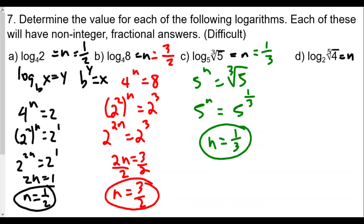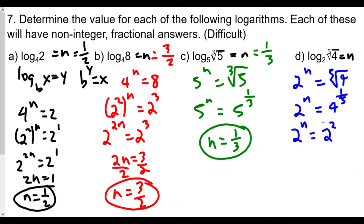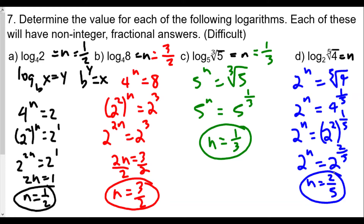For 7d, we have two to the n equals the fifth root of four. We rewrite this in exponential form — the radical becomes four to the one-fifth power because the index of five becomes the denominator of the exponent. We rewrite four as base two, so two to the n equals two squared raised to the one-fifth. When you raise a power to another power, we multiply exponents, giving us two to the n equals two to the two-fifths. Since the bases are equal, n equals two over five.